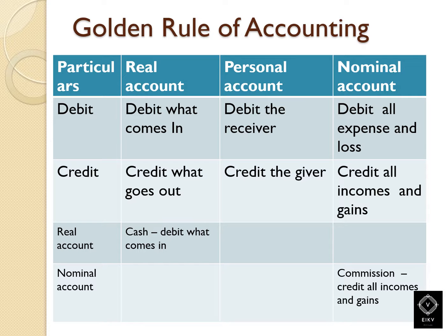As per golden accounting rules, we can classify every account into three categories: real account, personal account, and nominal account. The rules are — real account: debit what comes in, credit what goes out; personal account: debit the receiver, credit the giver; nominal account: debit all expenses and losses, credit all incomes and gains.